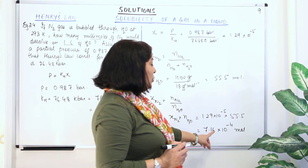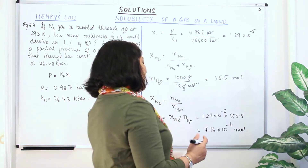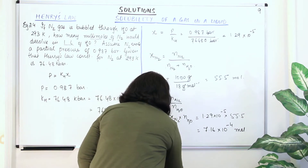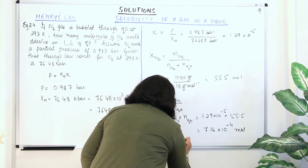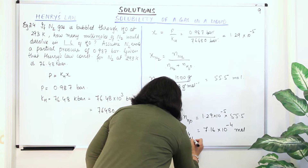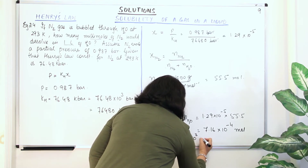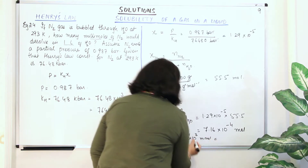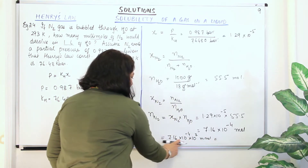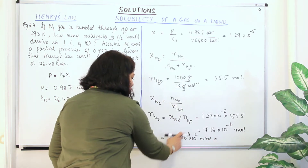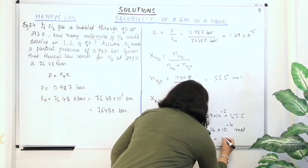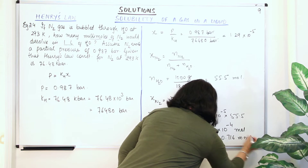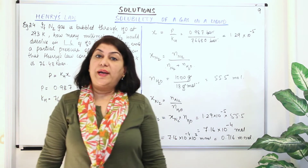In order to get millimoles from moles, you multiply by 10³. So 7.16 × 10⁻⁴ × 10³ = 7.16 × 10⁻¹ = 0.716 millimoles. And that is your answer.